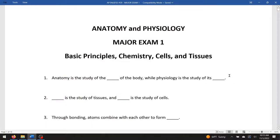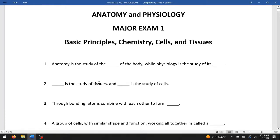Question one. Anatomy is the study of blank of the body, while physiology is the study of its blank. So anatomy is structure, and physiology is function. Blank is the study of tissues. That would be histology. And blank is the study of cells. That would be cytology.